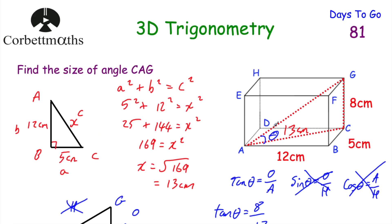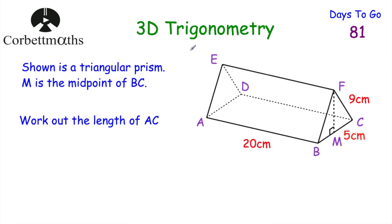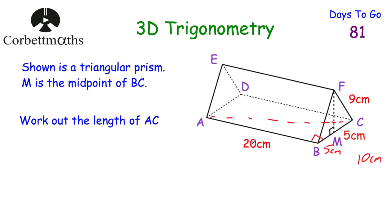Now let's look at some questions for you to try yourself. We've got a triangular prism with a length equal to 20 centimetres. M is the midpoint of BC, and F is directly above it — making an isosceles triangle at the front. Half of BC is 5 centimetres, so the whole of BC is 10 centimetres, and the length of CF is equal to 9 centimetres. The first part: can you work out the length of AC?